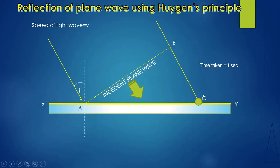Distance equals speed multiplied by time. The speed is v, so if you multiply speed v by time t, you get distance BC which is equal to vt.